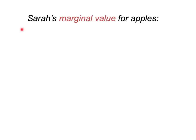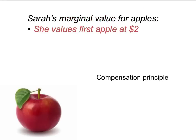So let's pick our buyer — it's going to be Sarah. Let's pick our homogeneous product — it's going to be apples. And we're going to look at Sarah's marginal value for apples. Suppose that Sarah currently doesn't have any apples. Let's ask: what is Sarah's marginal value of her first apple? How much does she value the first apple that we give her? To do that, we're going to use the compensation principle. We have to ask: what would be the amount of dollars that would just compensate Sarah for not having the apple? Or another way of putting it is: what is the dollar amount that Sarah at most would pay in exchange for that first apple?